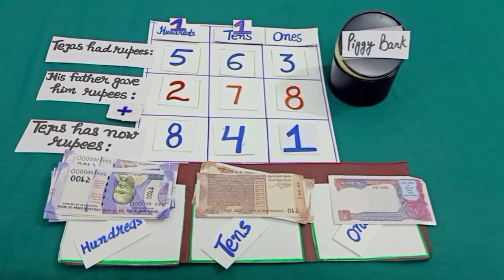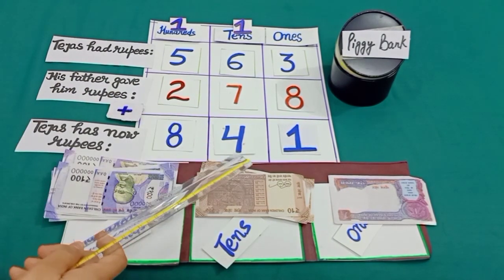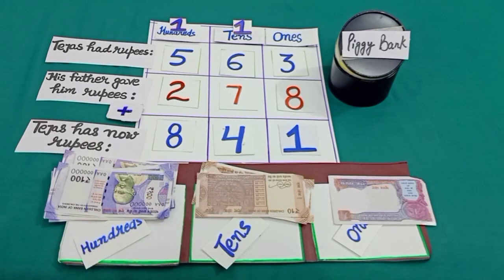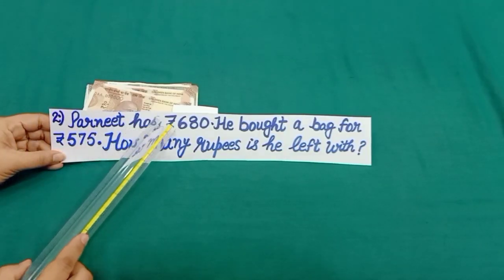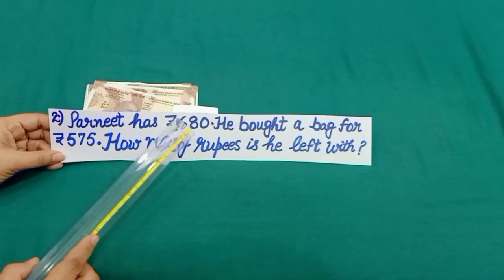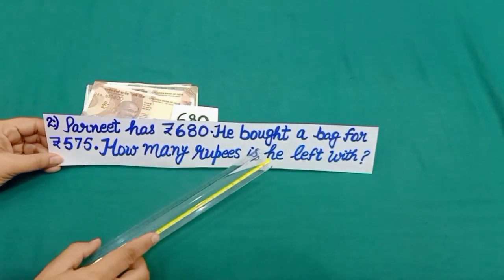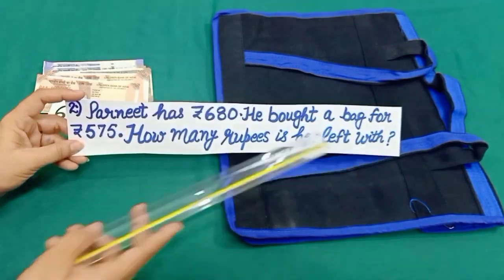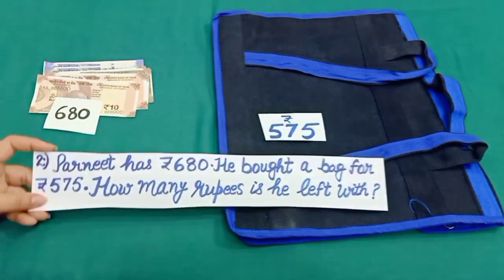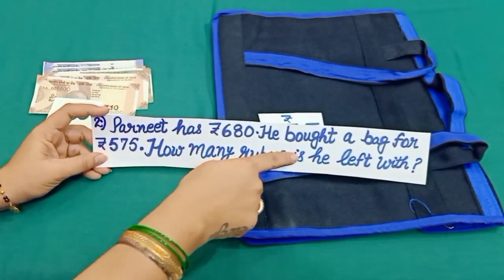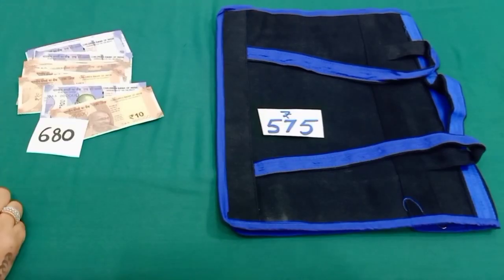So, my dear students, Tejas has now rupees 841. Sum number 2: Paneet has rupees 680. He bought a bag for rupees 575. How many rupees is he left with?